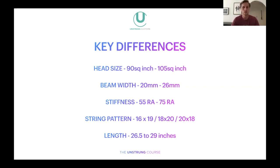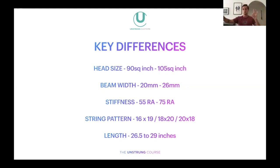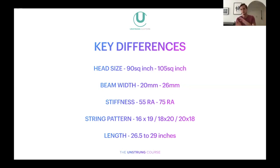Beam width goes together with head size. The beam width is the thickness of the beam, generally ranging from 19–20mm up to around 26mm. You have frames with a constant square beam — the same thickness all the way around, like a Prestige — and frames that change shape as they go around, like the Babolat Aerodrive with its aerodynamic wing throat shape. The thinner the frame, the less power and a bit more control. The thicker the frame, the more power you'll get.